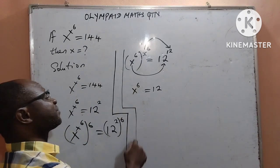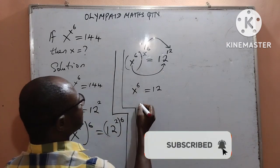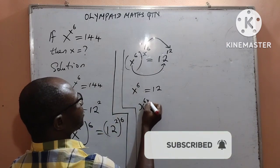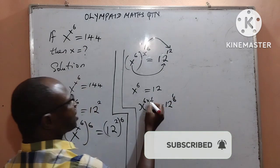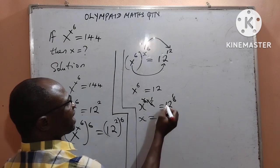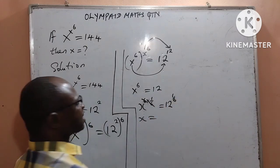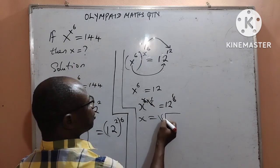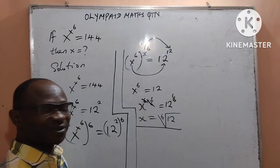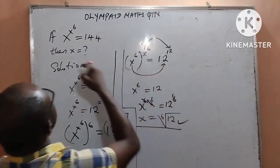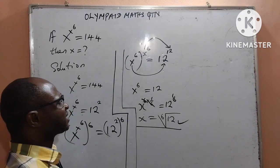To remove the power of 6 from x, I will apply both sides to the power of 1 over 6. That is, x to the power of 6, raised to 1 over 6, equals 12 to the power of 1 over 6. So that 6 cancels 6 to give me x equals 12 to the power of 1 over 6, which is the same as the 6th root of 12. That is the final answer — the value of x, as the question has asked us to find.